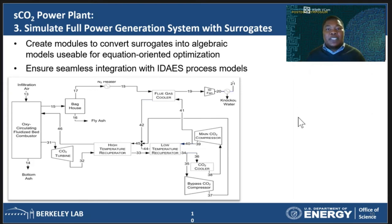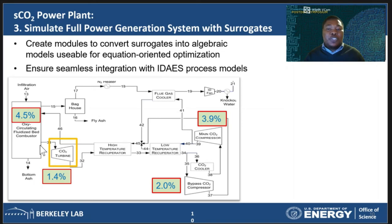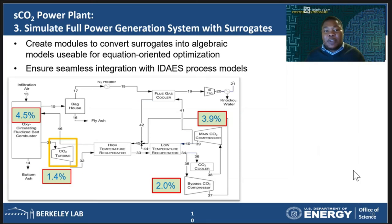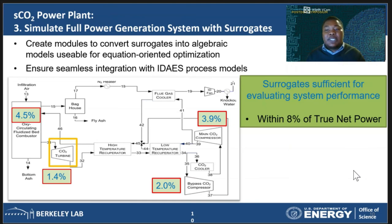Once this was done, we were able to simulate the full plant with our surrogates. Our turbine is highlighted in yellow here. We compared the values we got with the surrogate results in literature for the same problem. The values in the red boxes show the errors in the results of some of the units. As you can see, the maximum error for the units displayed here is about 4.5%, so our surrogates are not doing badly. The turbine, which is the unit around which this surrogate package was designed, shows an error of just over 1%. The surrogates estimate the net power to within 8% of the true value, so they appear to be sufficient for estimating system performance, allowing us to solve the entire flowsheet relatively quickly and to a reasonable accuracy, which we would struggle to do using the full EOS model.